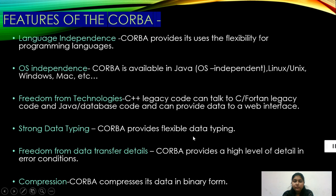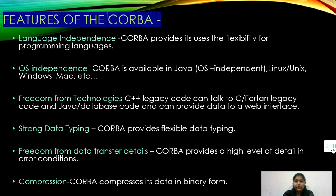The features of CORBA are as follows. First, language independence: CORBA provides its users the flexibility to use multiple programming languages. Second, OS independence: CORBA is operating system independent, available on Linux, Unix, Windows, Mac, etc. Third, freedom from technologies: C++ legacy code can talk to C, Fortran legacy code, and Java/database code, and can provide data to a web interface. Fourth, strong data typing: CORBA provides flexible data typing. Fifth, freedom from data transfer details: CORBA provides a high level of detail in error conditions. Sixth, compression: CORBA compresses its data in binary form.